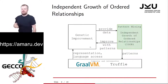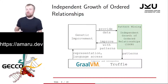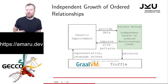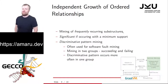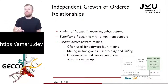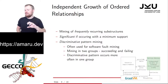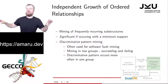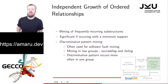That's the genetic improvement side of the Amaro framework. On the other side, what do we do with the data when we run experiments? We go to pattern mining, and for that the core algorithm is the Independent Growth of Ordered Relationships, or IGOR algorithm. IGOR is a discriminative pattern mining approach. Mining of frequently recurring substructures means finding structures that occur more than once — either within one abstract syntax tree or across multiple trees. In our case, we always mine across multiple trees.